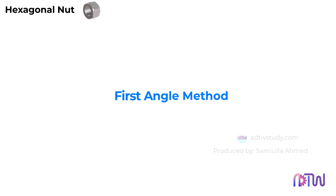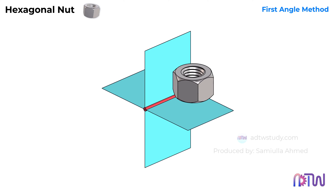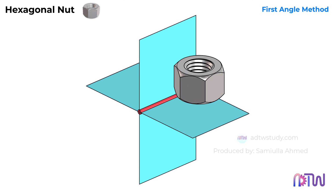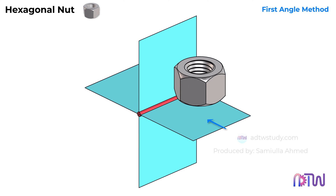The most commonly used method is the first angle method. In this method, we consider a hexagonal nut placed in the first quadrant. We consider viewing the nut from this direction — the view from this side will be our front view. When we view it from the front, it will look like this.